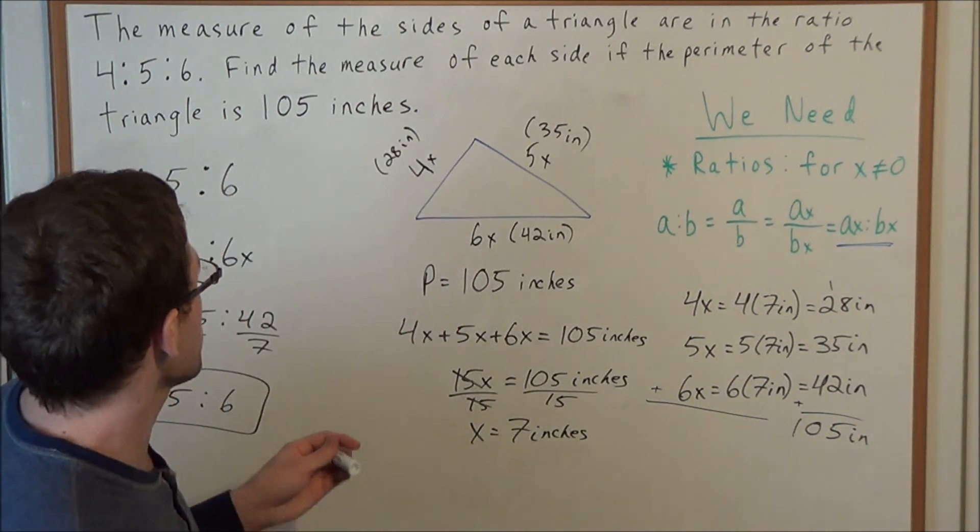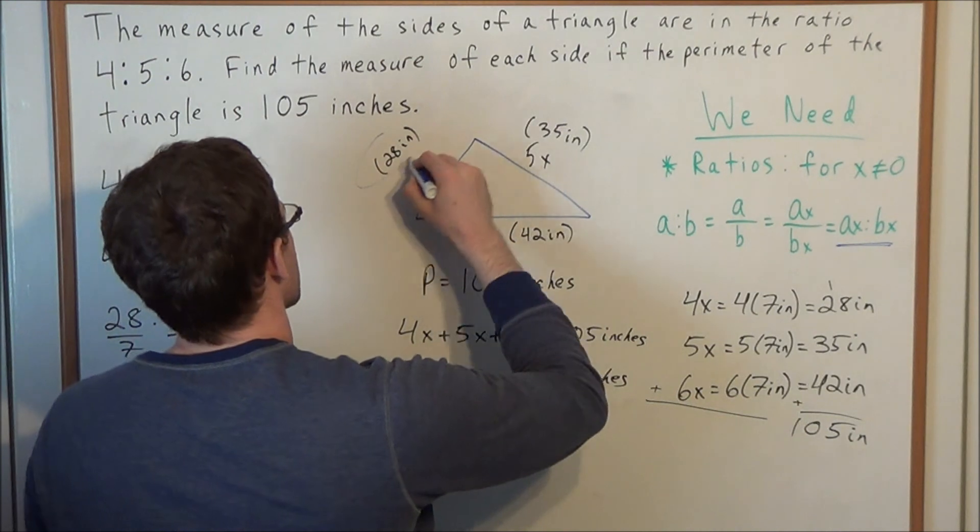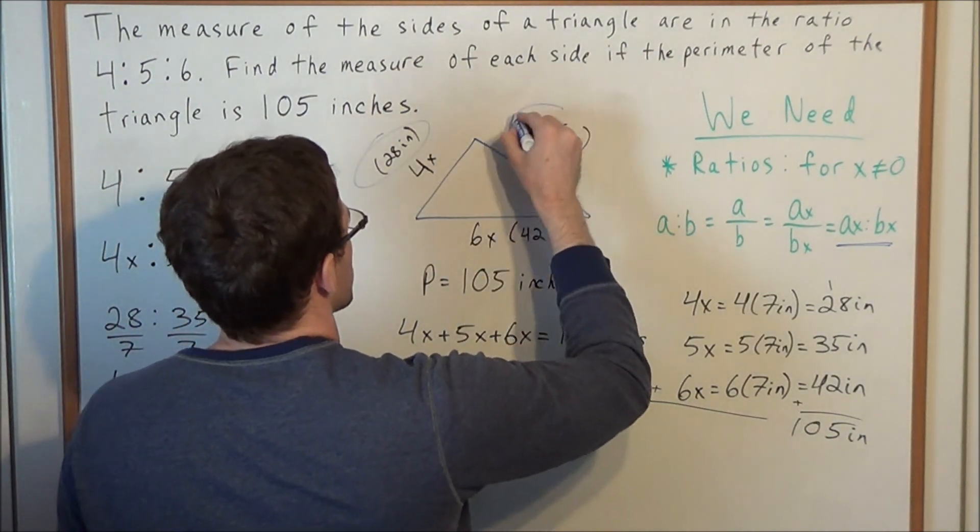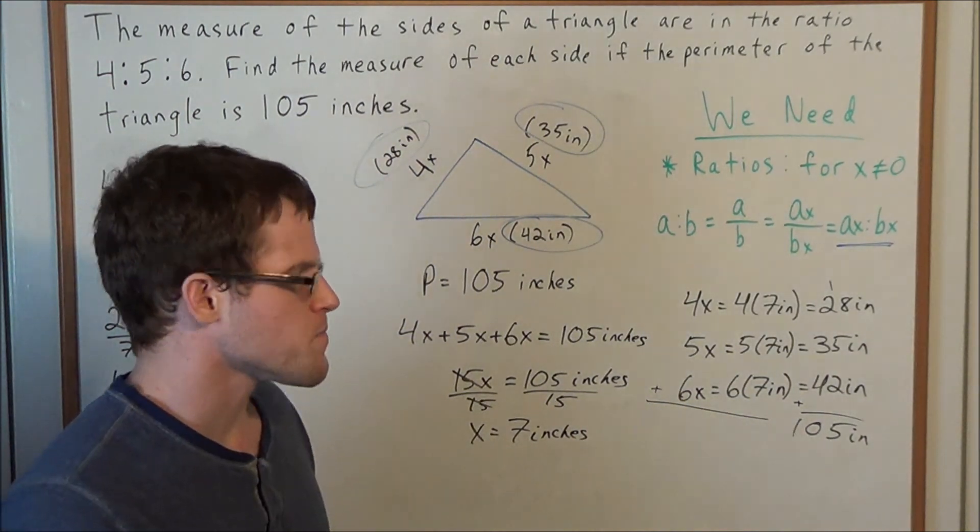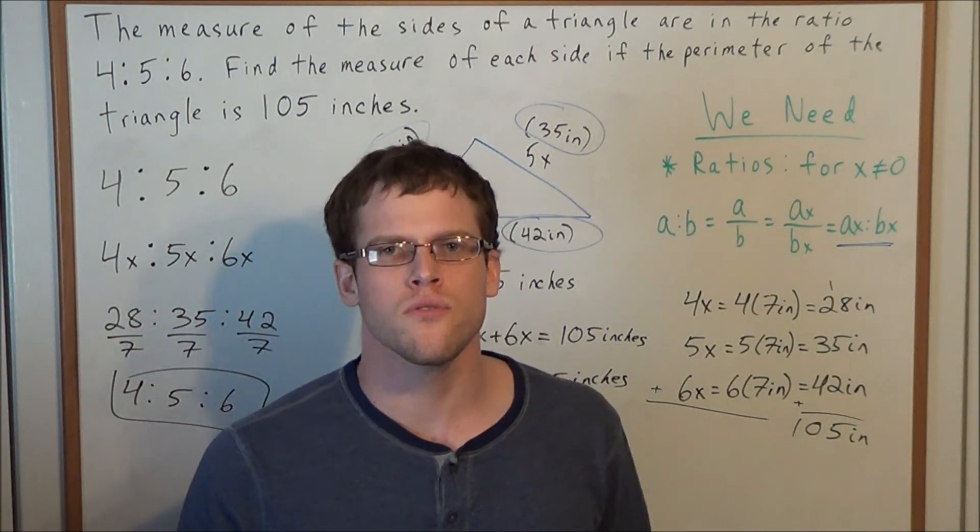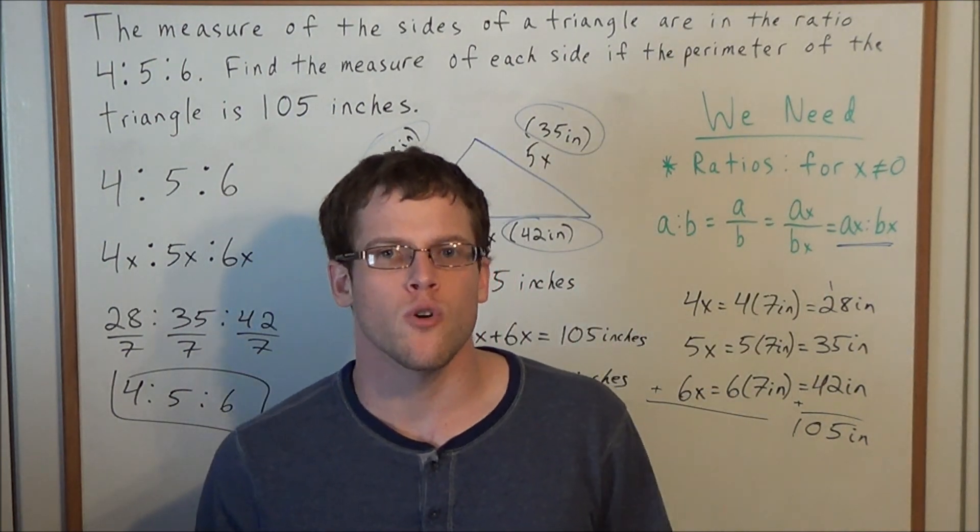Our answers to this problem are: one side is 28 inches, another side is 35 inches, and the last side is 42 inches. This concludes this triangle perimeter and ratios problem. Thank you all for watching and I hope this video was helpful.